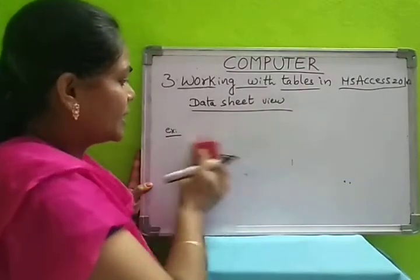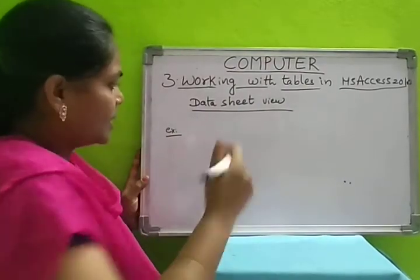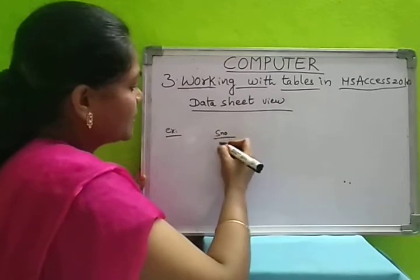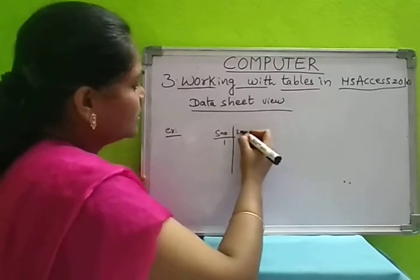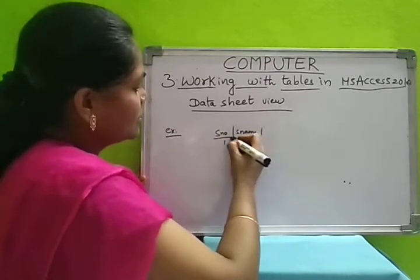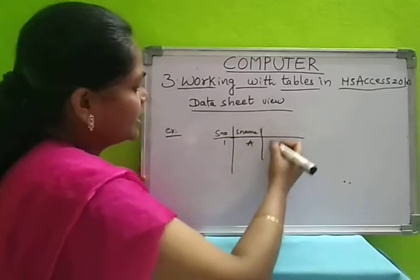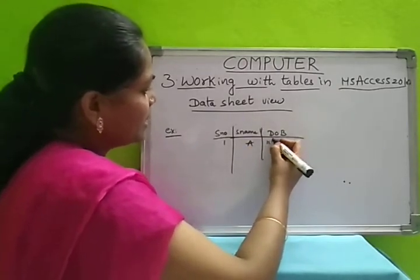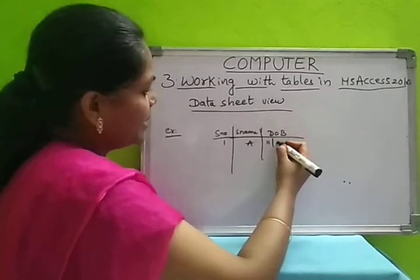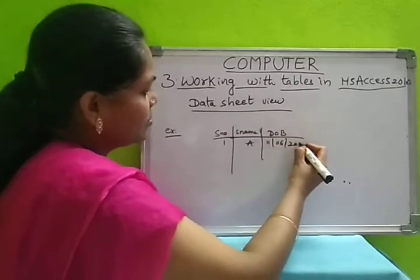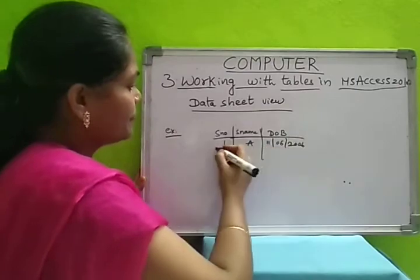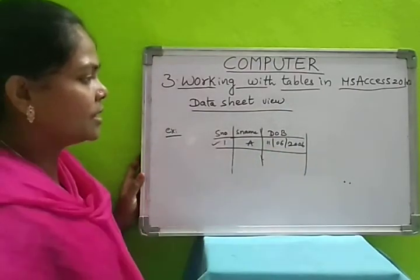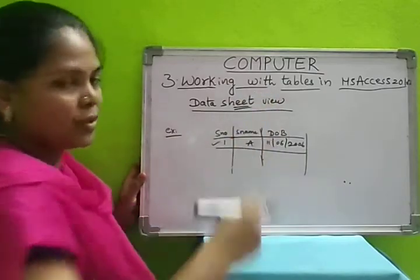After that, according to that data type you can enter the records. We have selected number, so enter numbers. For student name we selected text, so you can enter text. For date of birth we selected date/time, so you can enter the date. Like this you can enter the records in datasheet view.